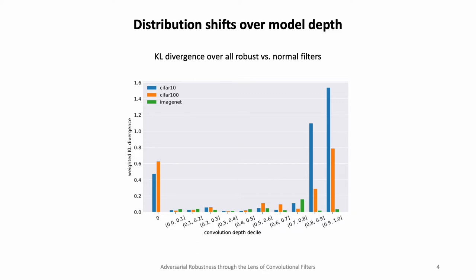The first thing we tried to understand is where the shifts happen in models. We compared normal versus adversarially trained models side by side by depth, and looked at where the filters differ. There is a somewhat expected difference in the deepest layers. But notably, the highest difference between normal and adversarially trained models is seen on CIFAR-10; on CIFAR-100 the difference is smaller, and on ImageNet there is barely any difference. It seems adversarial training has the most impact on very small datasets. We also see a very high shift specifically in the very first layer.